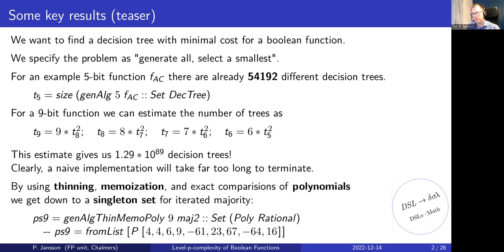Thankfully, using thinning, memoization, and comparison of polynomials, we can get down to a singleton set of polynomials for the two-level majority function Julia used in her thesis. This result is actually about one percent better than her hypothesis — probably negligible practically, but interesting because it means the decision tree she had reasoned about informally was not optimal. She had reasoned that one of four candidates had to be best, but none of those four was actually optimal.